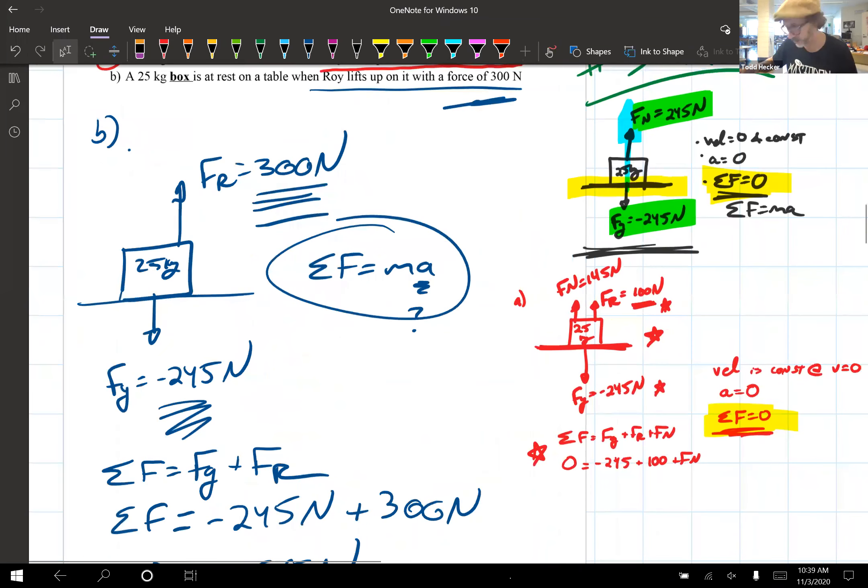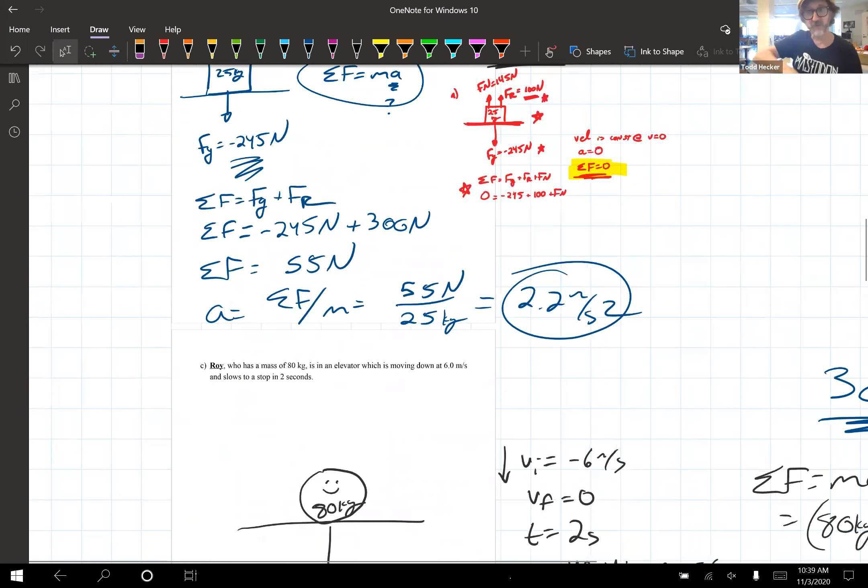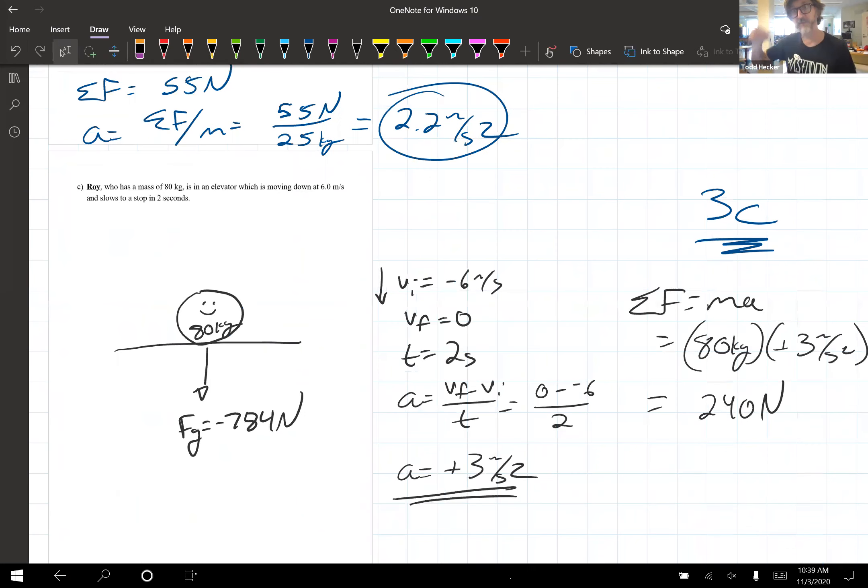So likewise, similarly, over here, what's lifting Roy? The elevator, but it's the elevator's floor, so we call that a normal force. And we need to figure out what it is. There is no force of the elevator because we've accounted for it right here. So that force of the elevator is your normal force.